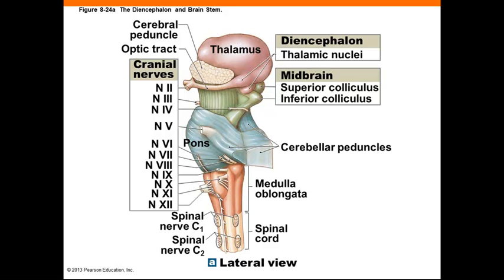This is a great figure to show the pons, which is the large blue section right in the middle. The pons links the cerebellum with the midbrain, diencephalon, cerebrum, and the spinal cord. It contains sensory and motor nuclei for cranial nerves 5, 6, 7, and 8.